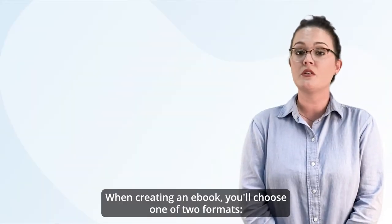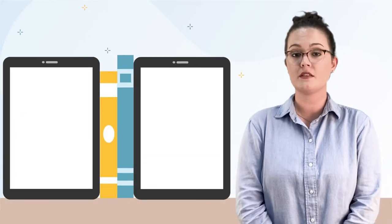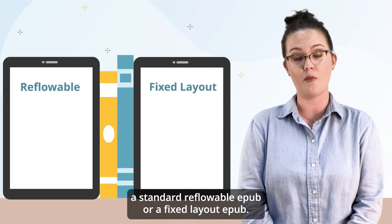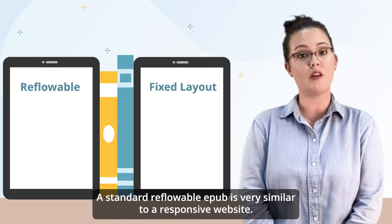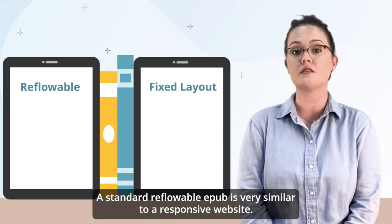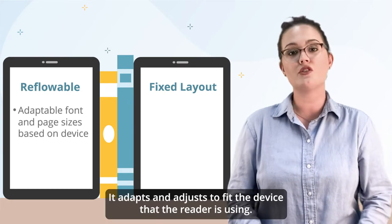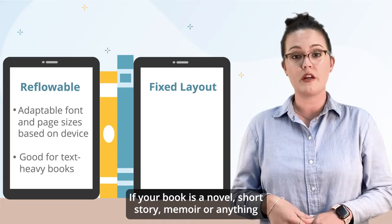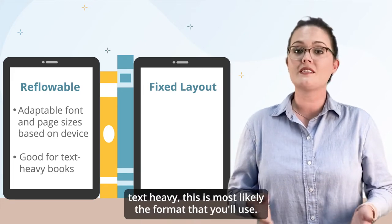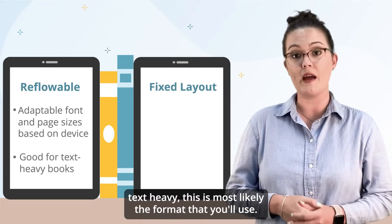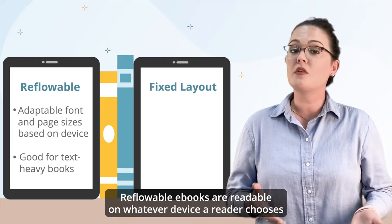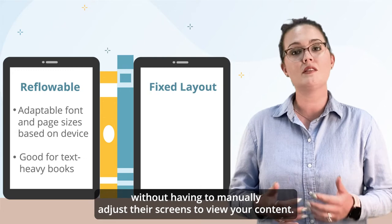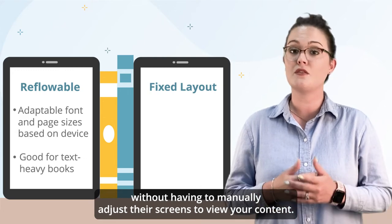When creating an ebook, you will choose one of two formats: a standard reflowable EPUB or a fixed layout EPUB. A standard reflowable EPUB is very similar to a responsive website — it adapts and adjusts to fit the device that the reader is using. If your book is a novel, short story, memoir, or anything text heavy, this is most likely the format you'll use. Reflowable ebooks are readable on whatever device a reader chooses without having to manually adjust their screens to view your content.